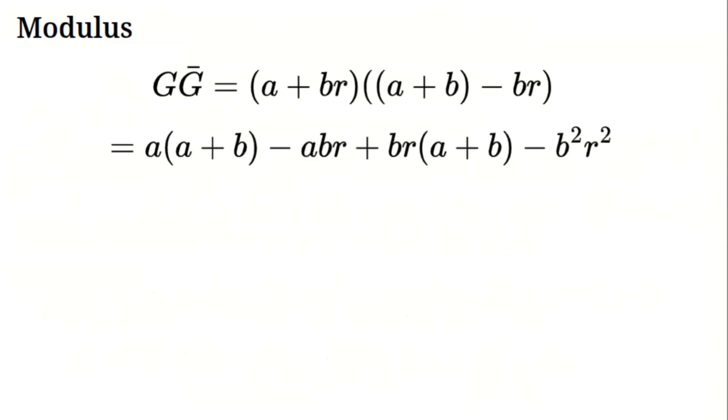Modulus. To find the modulus, compute G times its conjugate. That's A plus BR times A plus B minus BR. Expand A times A plus B plus A times negative BR plus BR times A plus B plus BR times negative BR. So A squared plus AB minus ABR plus ABR plus B squared R minus B squared R squared.